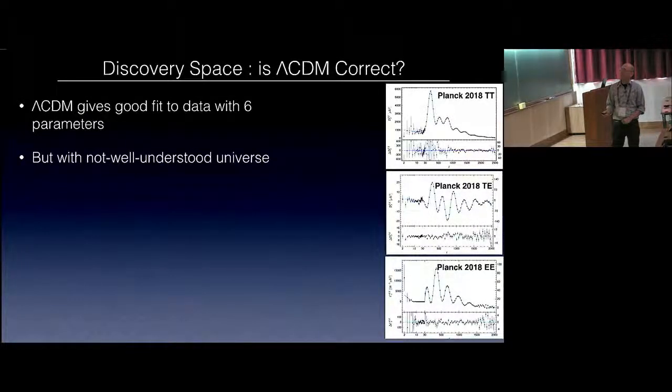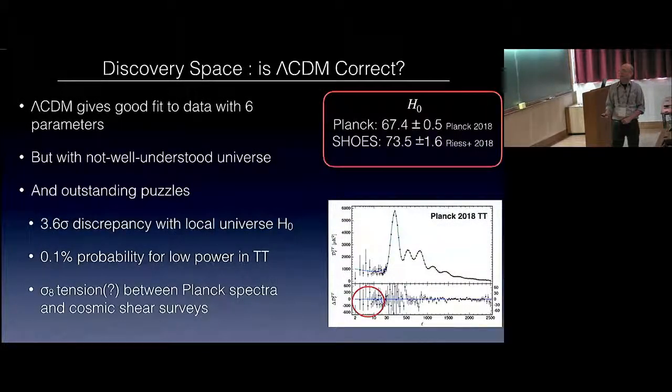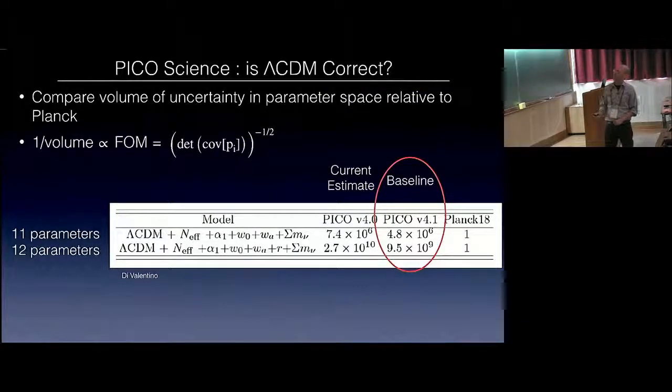Open discovery space: is Lambda CDM correct? We have good fit in six parameters, a very well understood universe. And we have the outstanding puzzles with H_0 and low-l anomalies, perhaps sigma-8 tension, perhaps not, not clear. So this shows the improvement that Pico will give on Fisher calculations. The figure of merit is proportional to one over the error bar, the volume of the error bar in parameter space. So relative to Planck, Planck is one. Relative to Planck, the baseline is about 10 billion. The error volume will shrink by about 10 billion. And it could go up to 30 billion, depending on what we think we actually do. This is with our constraint. If you keep R equals zero, then this is about 50 million.